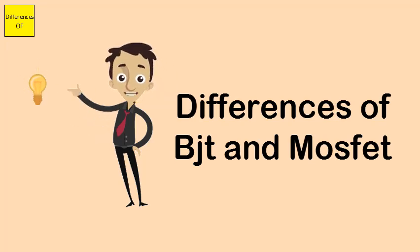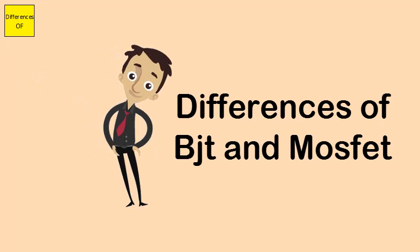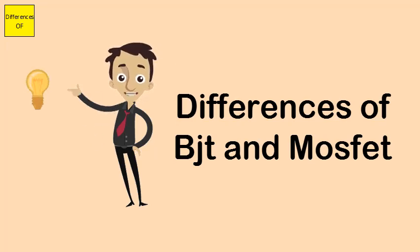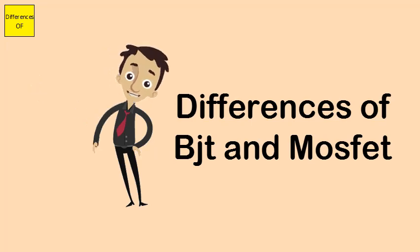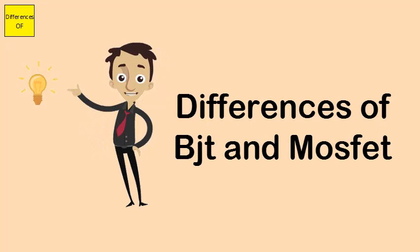BJTs are preferred for low-current applications. MOSFETs are for high-power functions. BJTs are less commonly used in digital and analog circuits, while MOSFETs are considered to be more commonly used.